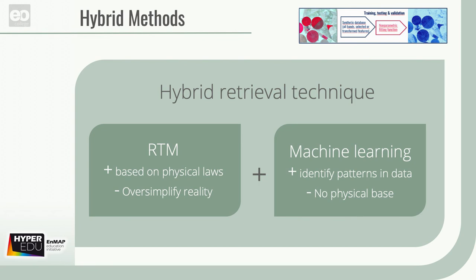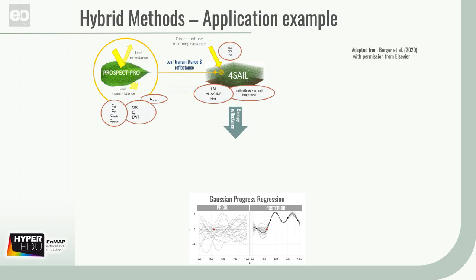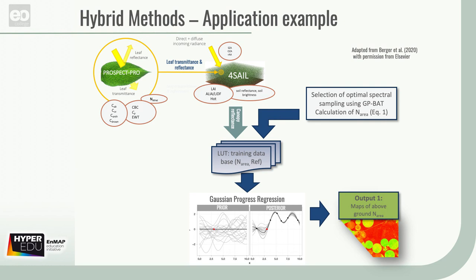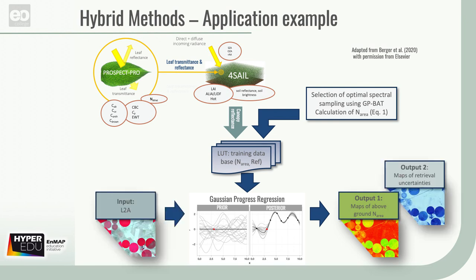For vegetation properties mapping, hybrid methods usually means a combination of machine learning techniques and RTMs, thus incorporating the flexibility and scalability of machine learning while respecting the physics encoded in the RTM. One application example is the combination of the ProSAIL Pro model with variational heteroscedastic Gaussian process regression, or VHGPR for short, for the estimation of above-ground nitrogen content, as demonstrated by Berger and colleagues in 2020. First, the VHGPR model was trained on ProSAIL Pro simulated spectra by means of lookup tables. Subsequently, the GPR band analysis tool was used to identify the most relevant bands for the estimation of above-ground nitrogen content. Finally, the approach was successfully applied on Spark HiMap imagery, including the provision of uncertainties.